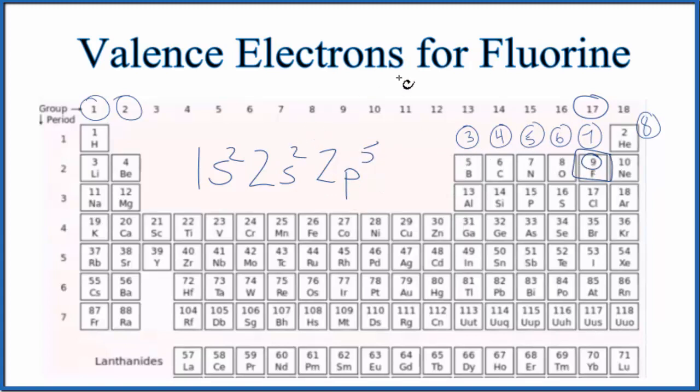But we're only interested in the valence electrons for fluorine. So we want to look at the highest energy level. Think of it as the valence shell. That's the second energy level. So the second energy level right here, if we count the valence electrons up, we have 2 plus 5. That gives us 7.